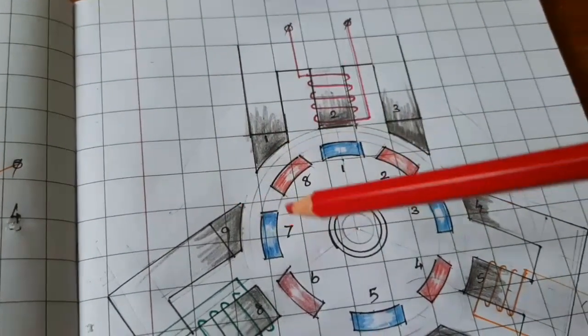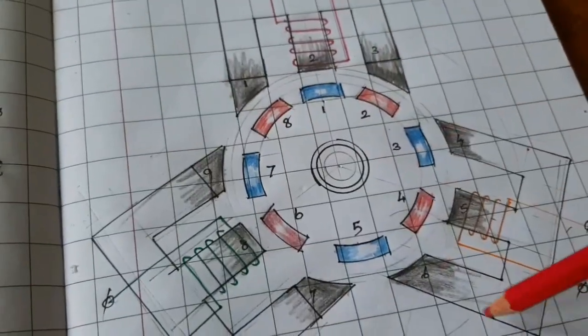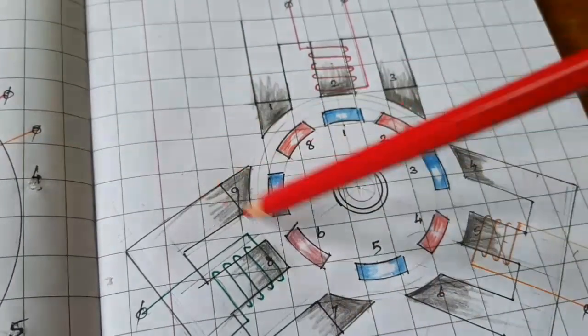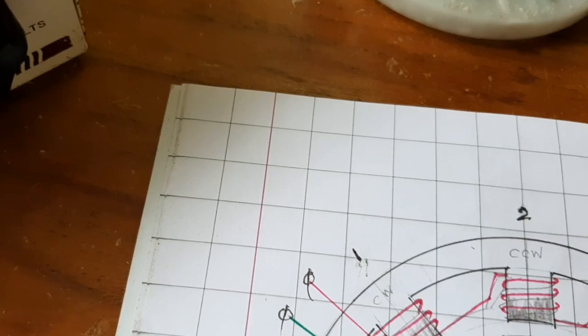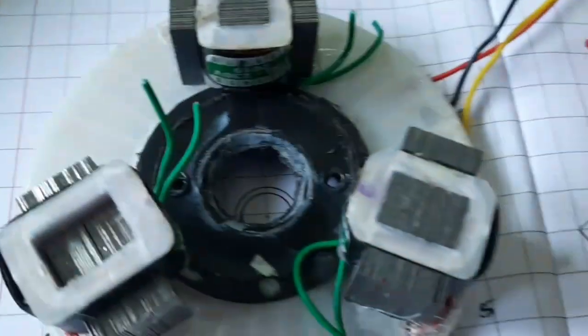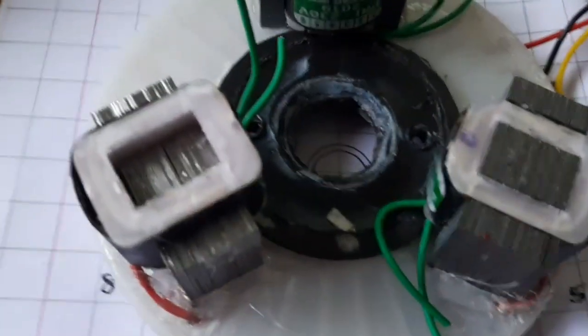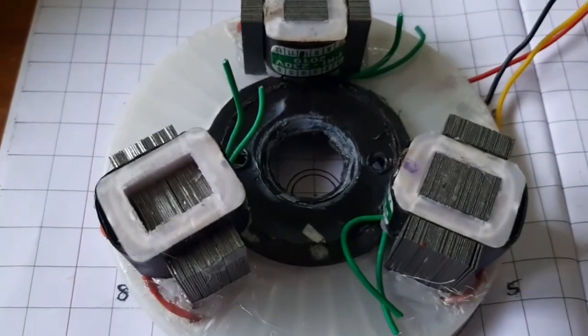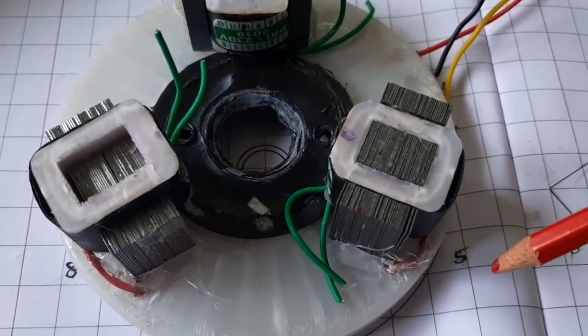Now going to assemble: the three transformers are fixed over the PVC sheet at 120 degrees from each other.